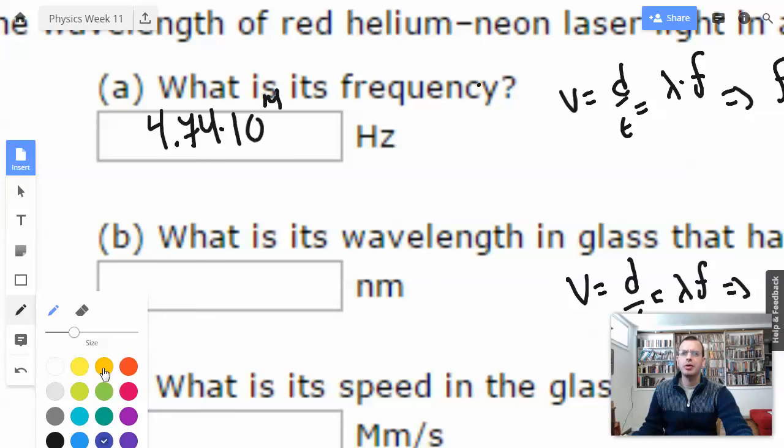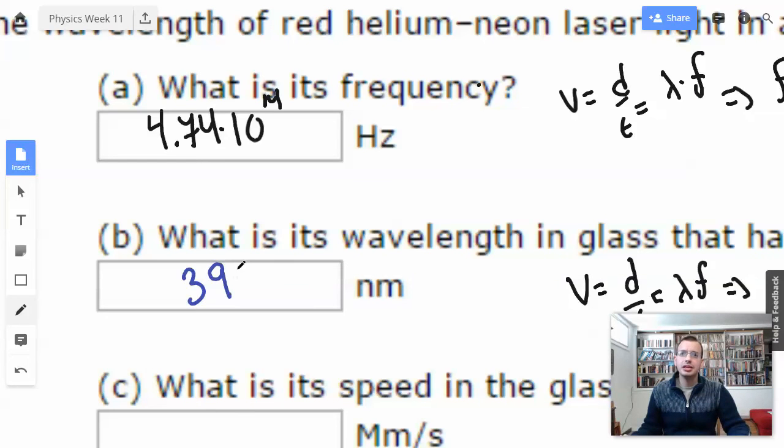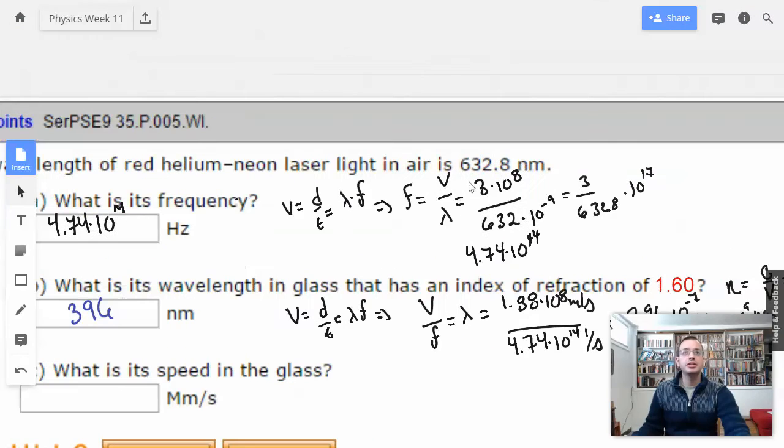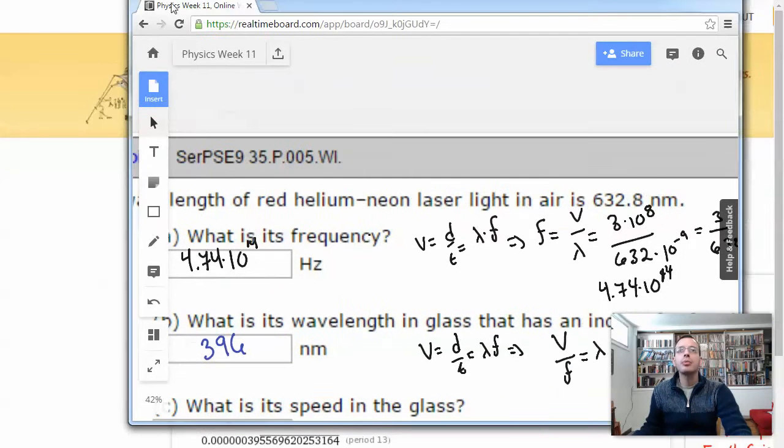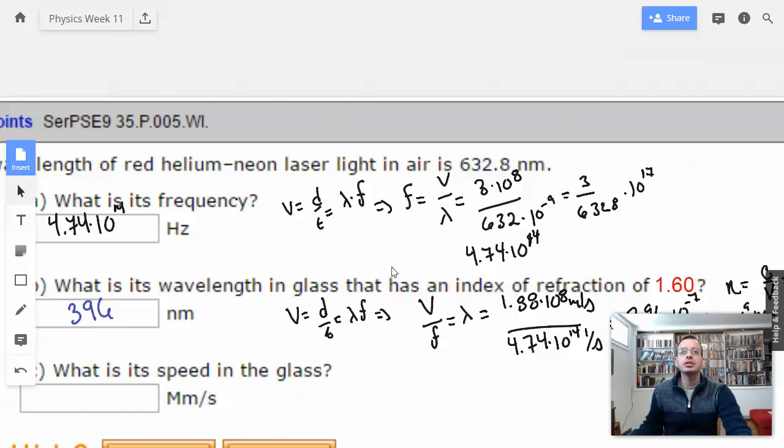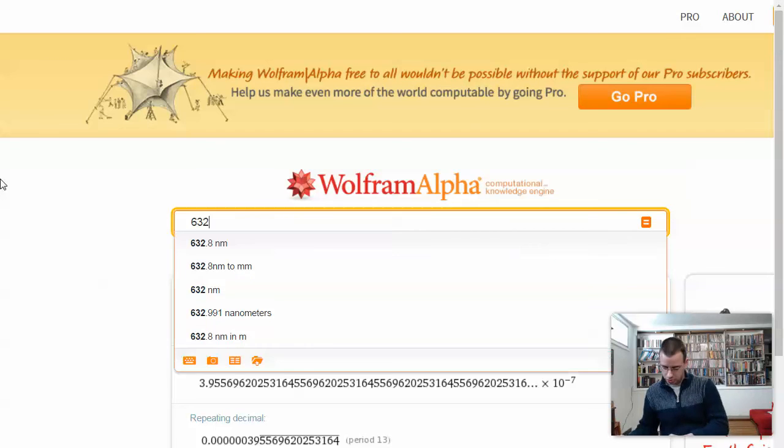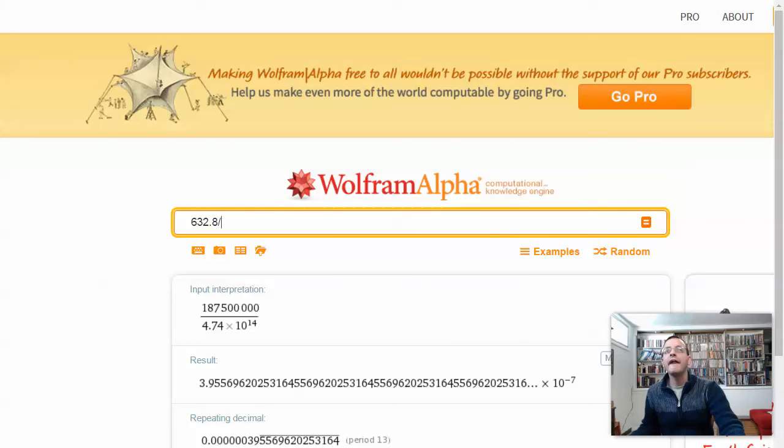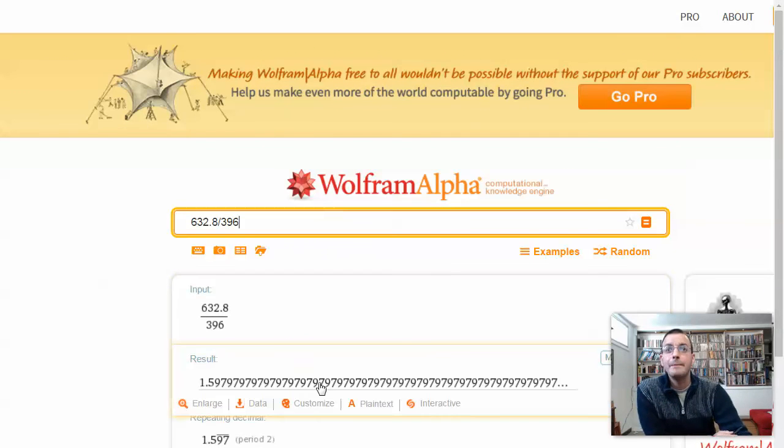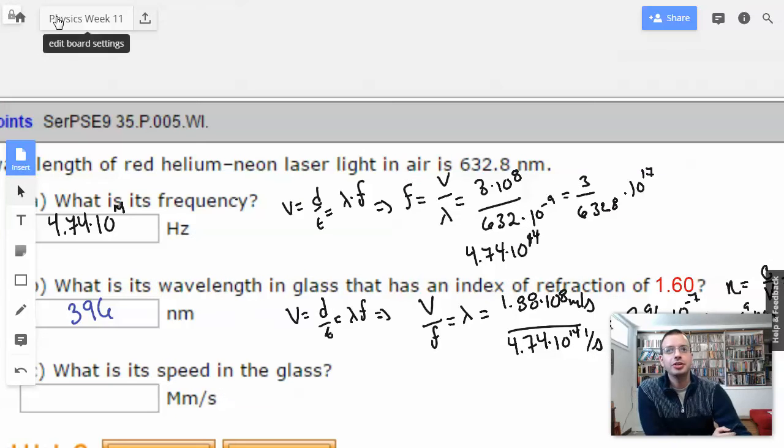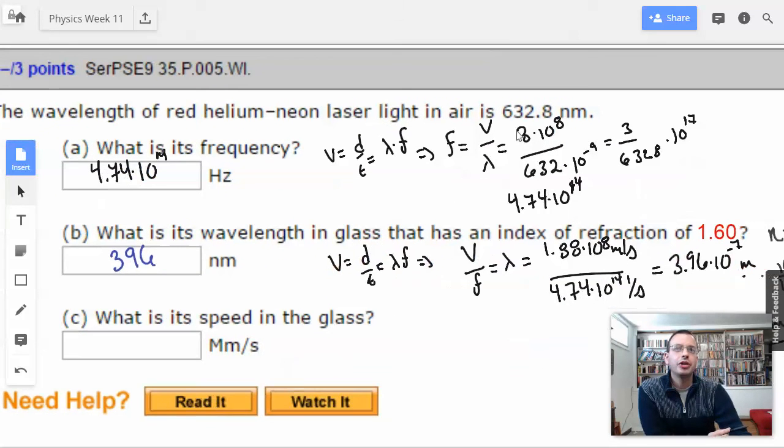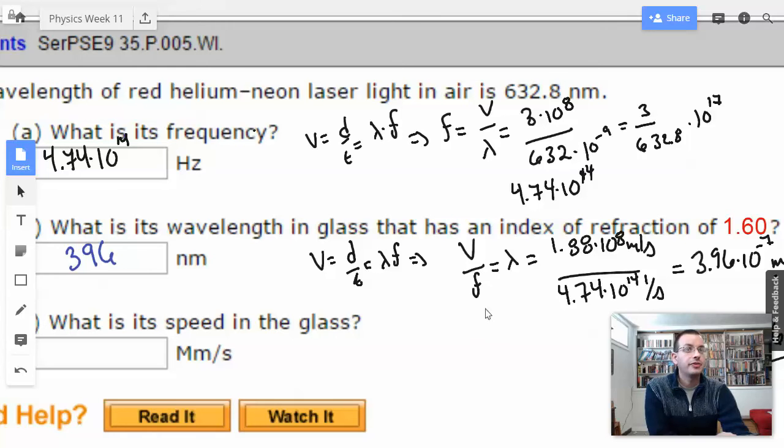I'm going to go to blue. 396 nanometers. So 632 divided by... 632.8 divided by 396. I have a feeling this is going to give us 1.6. Totally did. So a shortcut you can use in life is the frequency gets smaller by a factor of 1.6, just like velocity gets smaller by a factor of 1.6.